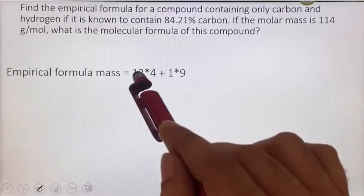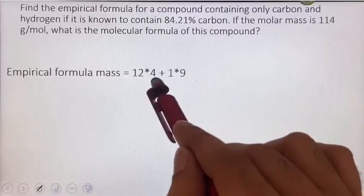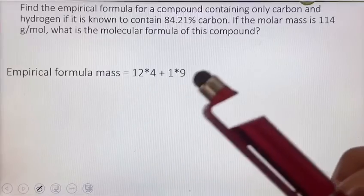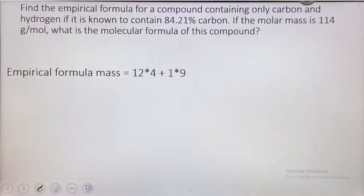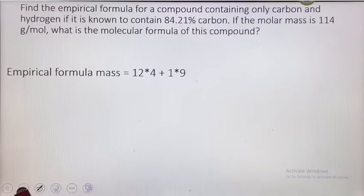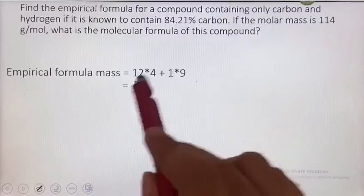Plus 1 times 9, since I have 9 atoms of hydrogen. 1 is the atomic mass of hydrogen. I just add them up and I get the answer as 57.